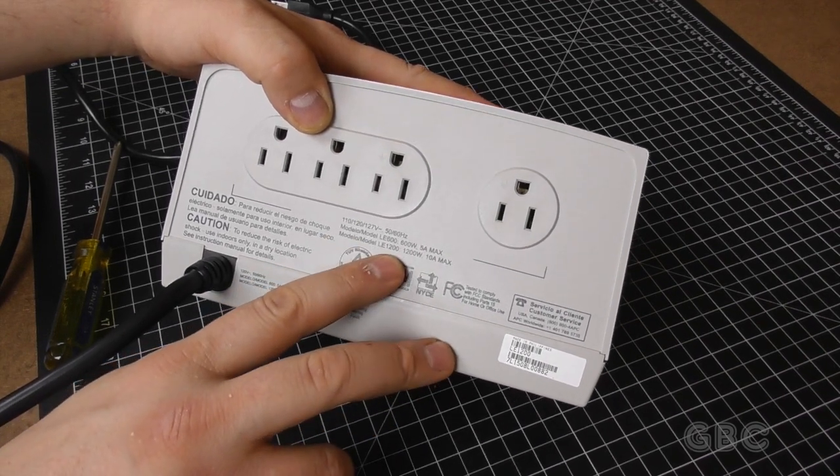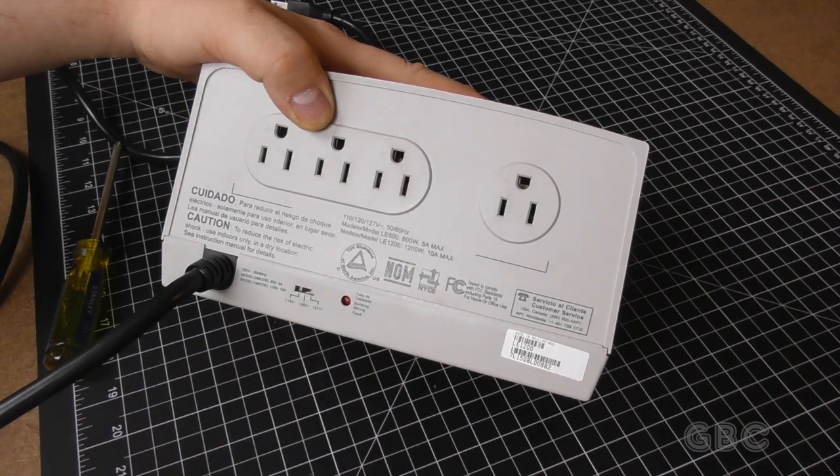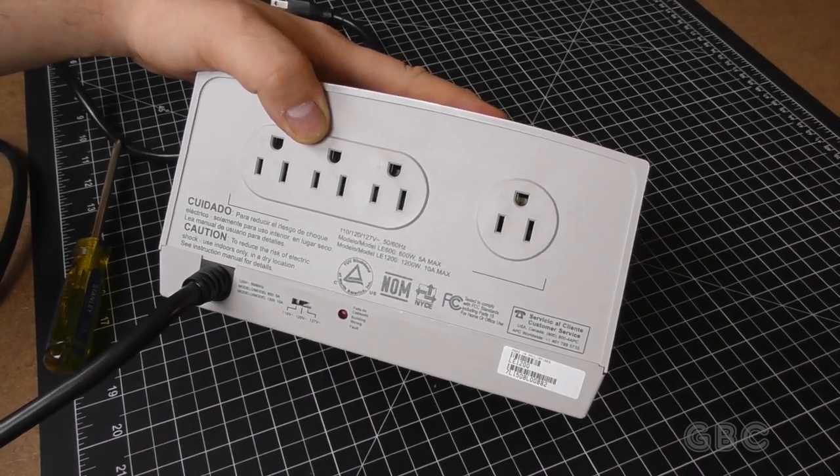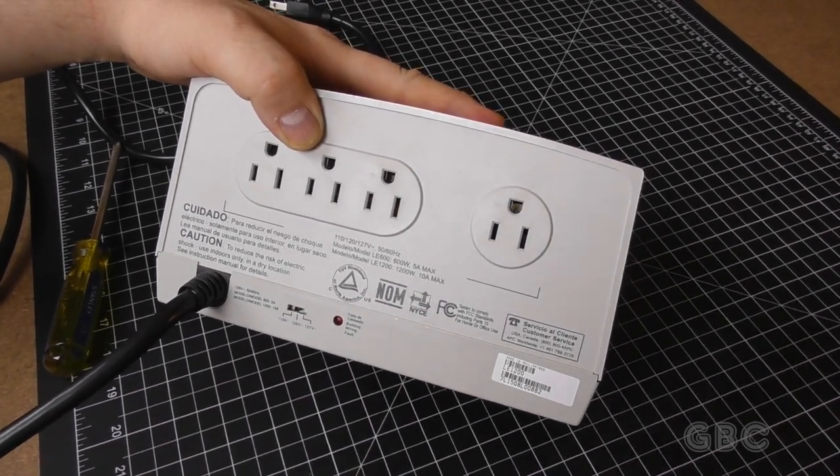And then they have printed on the back here some info on the model. This is the 10 amp model. I'm going to pause the camera and get the cover off.